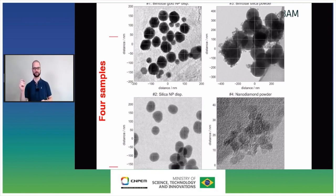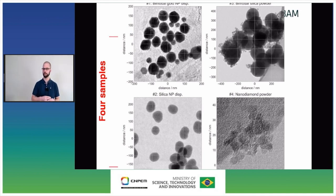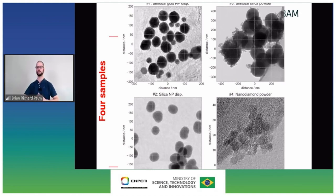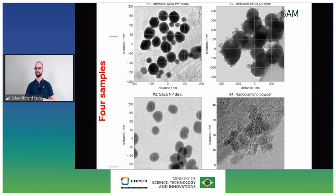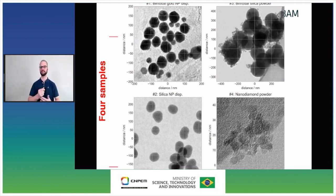Sample three was a bimodal silica powder that we put together ourselves from two monomodal silica powders — the two populations are about a factor of 10 apart in size. Sample four is a commercial nanodiamond powder from Plasma Chem in Germany. They claim their nano diamonds are between 4 and 6 nanometers; however, we will see that their powders are actually quite polydispersed.